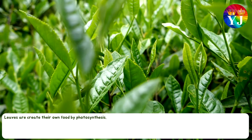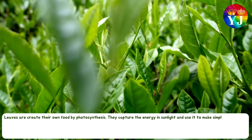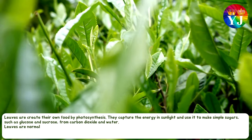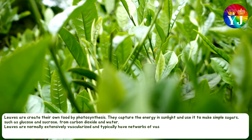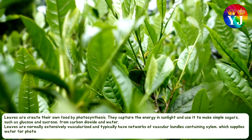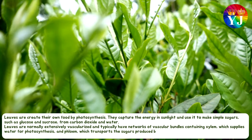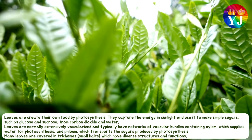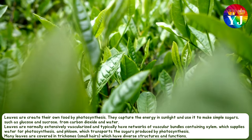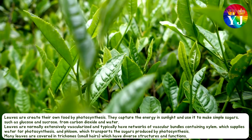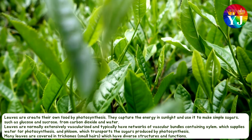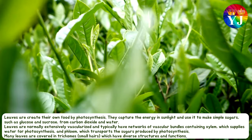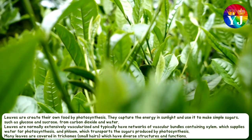Leaves create their own food by photosynthesis. They capture the energy in sunlight and use it to make simple sugars, such as glucose and sucrose, from carbon dioxide and water. Leaves are normally extensively vascularized and typically have networks of vascular bundles containing xylem, which supplies water for photosynthesis, and phloem, which transports the sugars produced by photosynthesis.